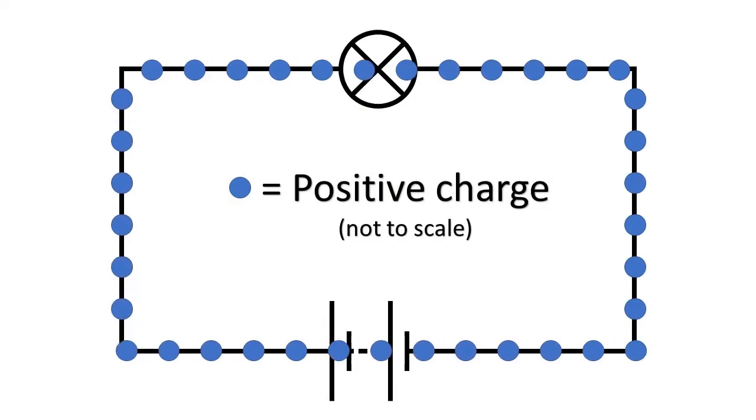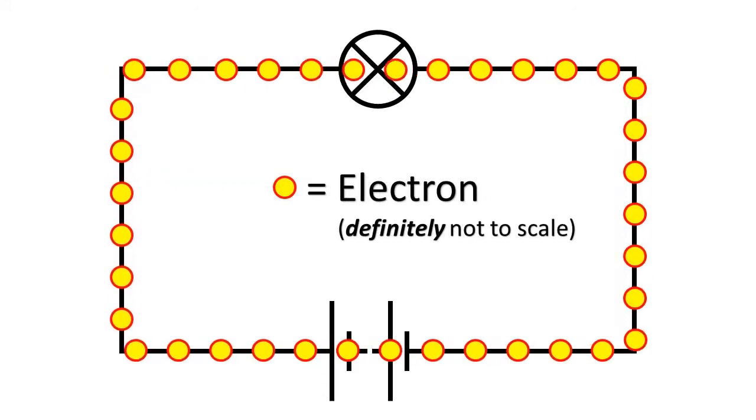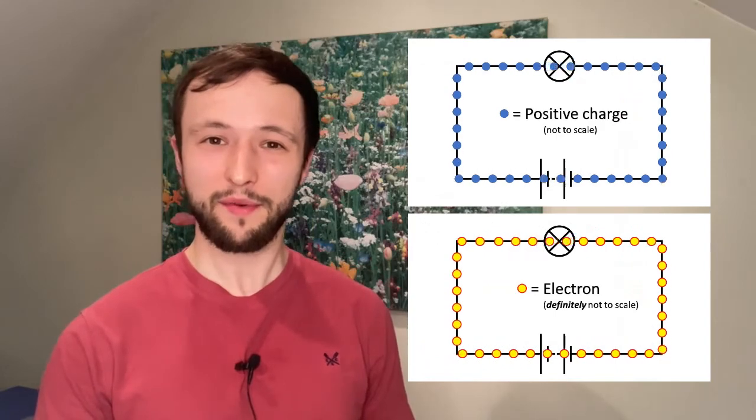In summary when we say that conventional current has positive charge moving around a circuit in this direction what's actually happening is negative electrons are flowing in the opposite direction because the effect is the same.